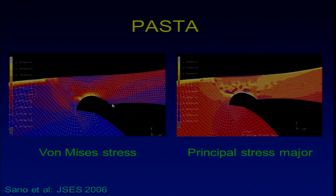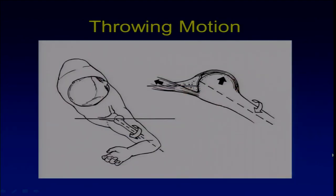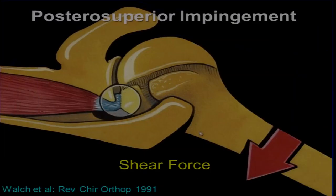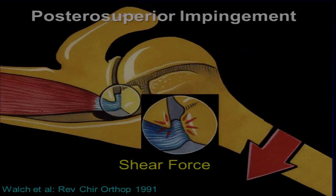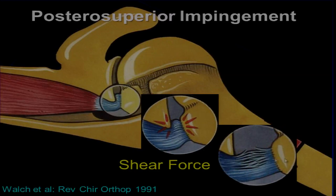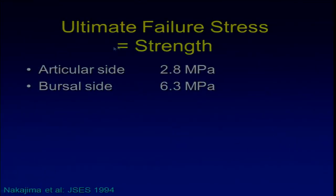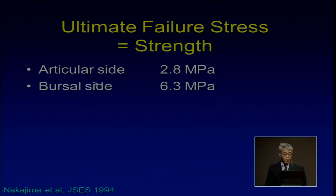Once the articular side tear is created, there is another stress concentration at the bottom of the tear that may deepen it until it becomes a full thickness tear. Another mechanism is the throwing motion: if the patient cannot rotate the trunk enough, they hyperextend the arm, causing internal impingement and shear stress on the articular side of the supraspinatus tendon. Additionally, the ultimate failure stress — the strength of the articular side — is much weaker than the bursal side, which explains why PASTA lesions occur in throwing athletes.